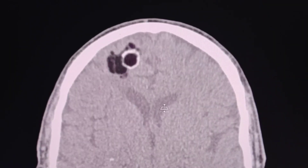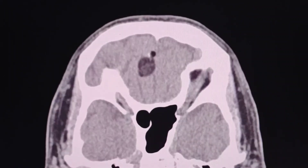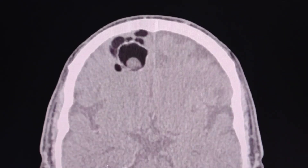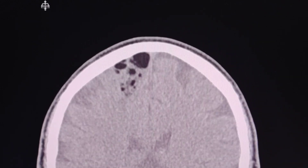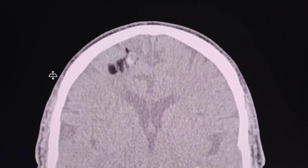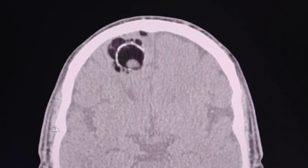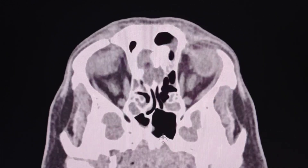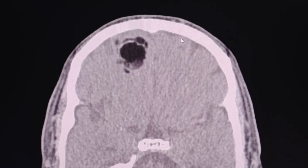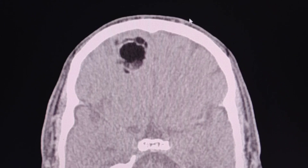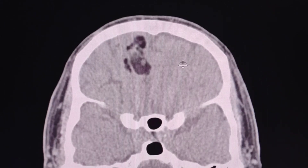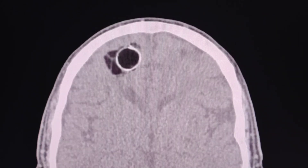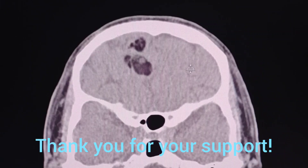Back again to the CT scan for a last look. Dear friends, this was a very interesting case — an intracranial brain dermoid cyst, specifically a ruptured dermoid cyst. Thank you for watching. If you like my videos, consider subscribing to my channel so you'll be notified every time I upload a new video. Thank you and see you soon.